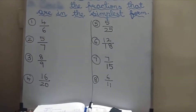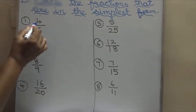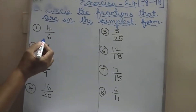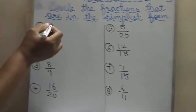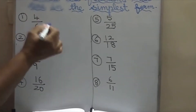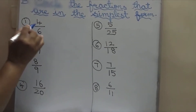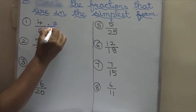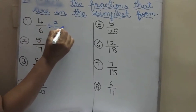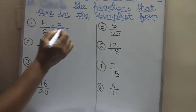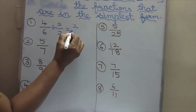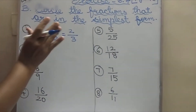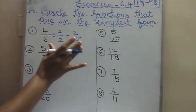The first one is 4 by 6. We can divide it — it is not the simplest form. Because you can divide it by 2 tables: 2 by 2, giving 2 2s are 4 and 3 2s are 6. So this is not the simplest form — you have to write like this and leave it.